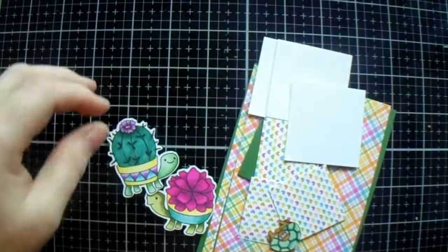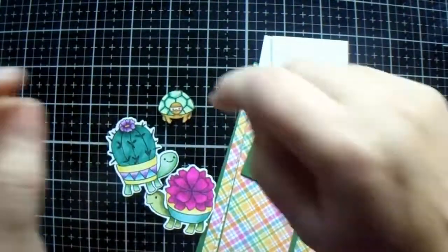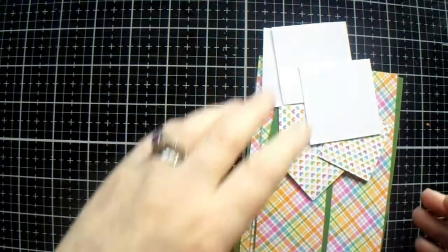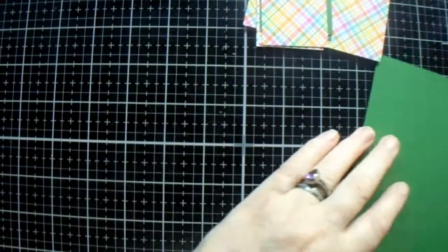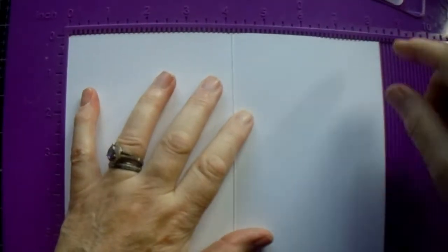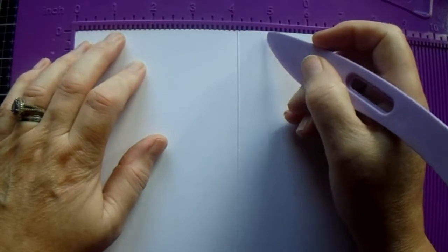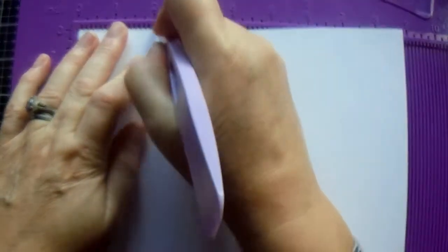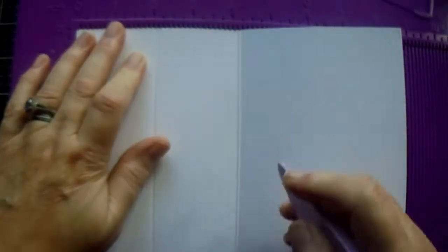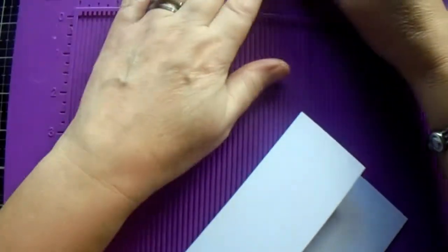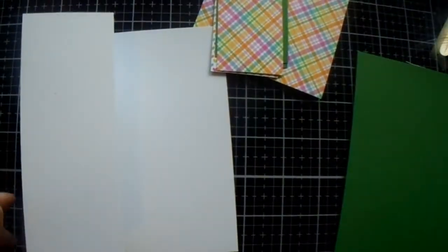It's a Hero Arts one anyway. And then this is just a little Clearly Besotted that went with what I was doing. So you need a card base that is 8 and a quarter. You can score it at 2 and 1 sixteenth and 4 and 1 eighth. You mountain fold the first and you valley fold the second, and that's your card base done.